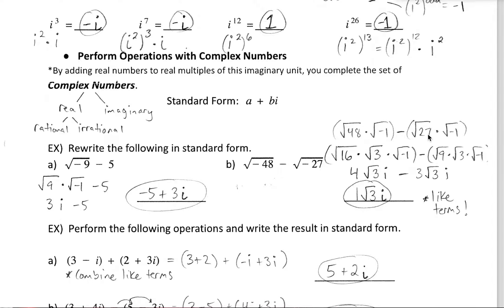Similarly, the square root of negative 27 is the square root of 27 with i attached. A perfect square factor of 27 is 9, so 9 times 3 lets us simplify the square root of 9 and put 3 out front. The remaining square root of 3 and i stay attached. Now we have 4 times square root of 3i minus 3 times square root of 3i. Since the radicals are the same, these are like terms: 4 minus 3 gives 1, leaving just the square root of 3i.